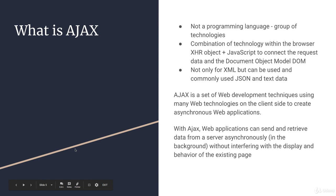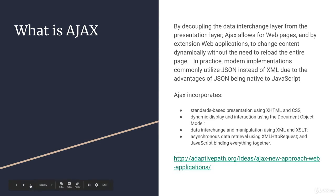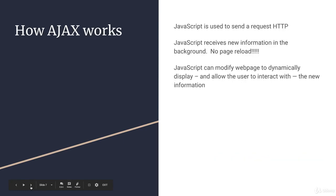Ajax is not a programming language — it's a group of technologies. It's a combination of the browser and JavaScript that makes things happen. Ajax allows you to send and retrieve data asynchronously to the server, meaning it doesn't interfere with the display or behavior of the existing page — it just runs in the background getting that data. JavaScript is at the very heart of it: it sends the request, receives the information, and modifies the content the user is interacting with.